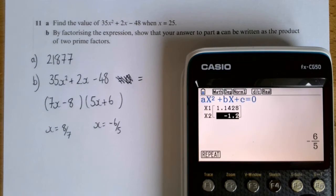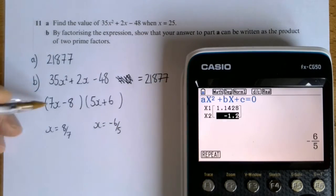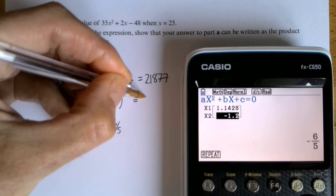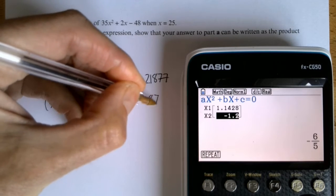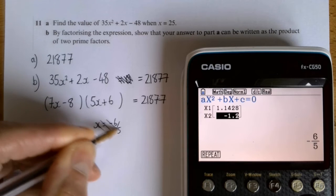The question is about what this equals when x is 25, which is 21,877. So what we're saying is that this equals 21,877.